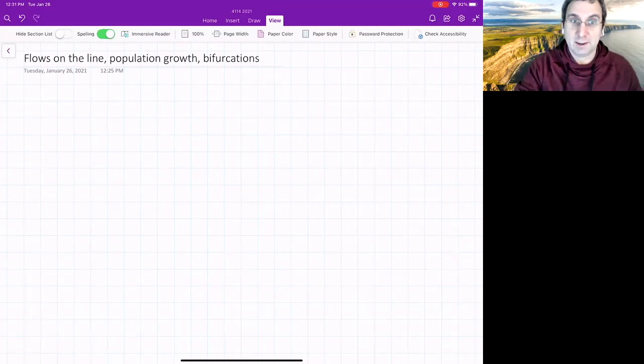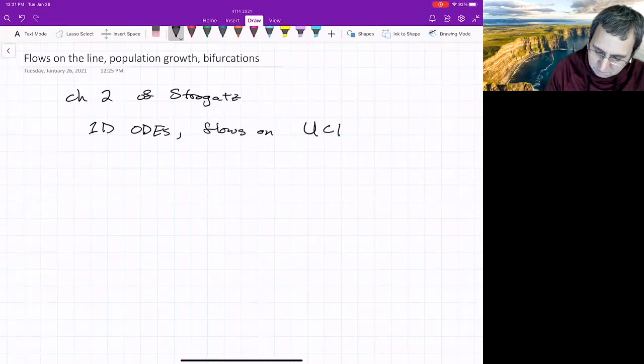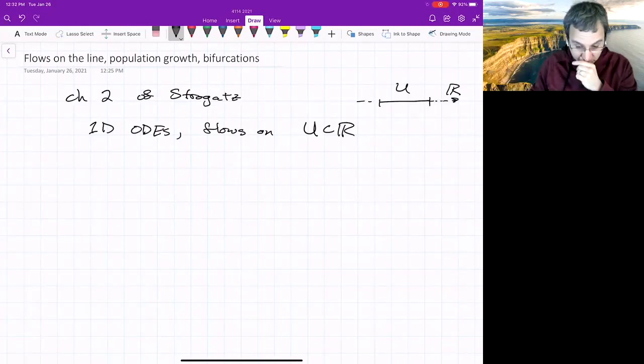We're talking about flows on the line, 1D ODEs, flows on some section of the real line. Often we're just looking at a subset. Maybe we'll look at all of R, so possibly the whole thing.